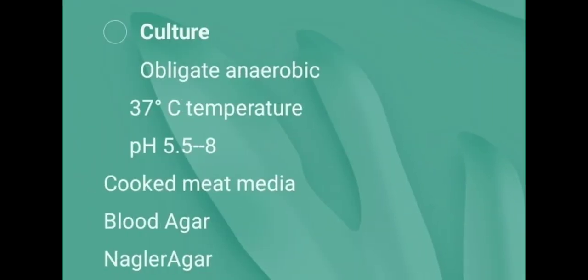Clostridium is cultured with cooked meat media, blood agar, and Nagler agar. The cultural characteristics of Clostridium perfringens are that they can grow at 37 degrees centigrade and a pH range of 5.5 to 8.